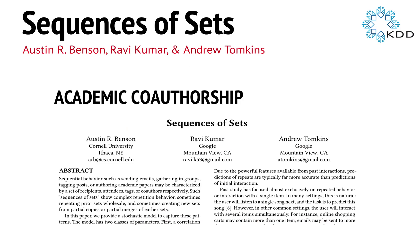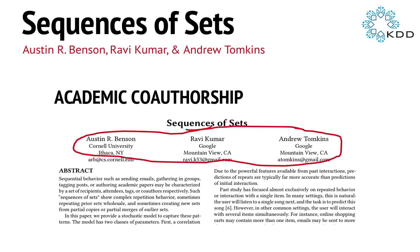This also shows up in social networks — in particular academic social networks, where the sequence of sets for me is the set of co-authors that I have on my papers. This paper has co-authors Ravi and Andrew. This is the fourth time we've all appeared on a paper together, whereas Ravi and Andrew have appeared on 68 previous papers together.